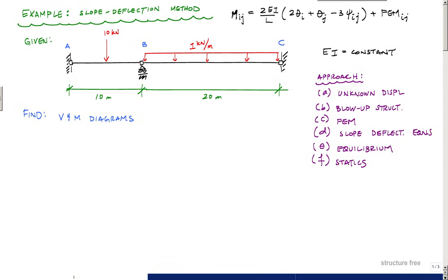Here's the slope deflection equation. Hopefully you've seen this equation or this form of equation before. In some textbooks they use the symbols A, B instead of I, J, or N, F instead of I, J.